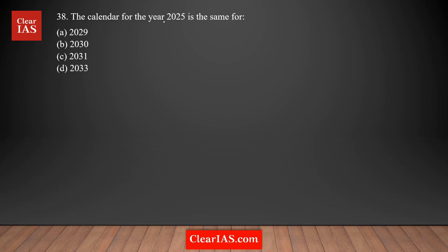The calendar for the year 2025 is the same as which of the following? You can see the options are 2029, 2030, 2031, and 2033 — they're very close to 2025. The best way to approach this question is to take a reference date and figure out which answer choice is going to fall on the same day. That would be the easy, logical approach — not confusing, and everyone could easily do it. Let's start with that approach by taking a reference date: Jan 1st, 2025.